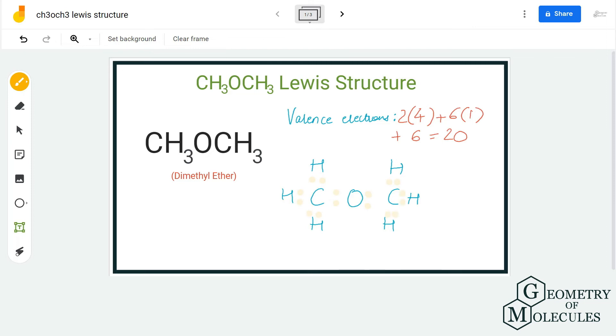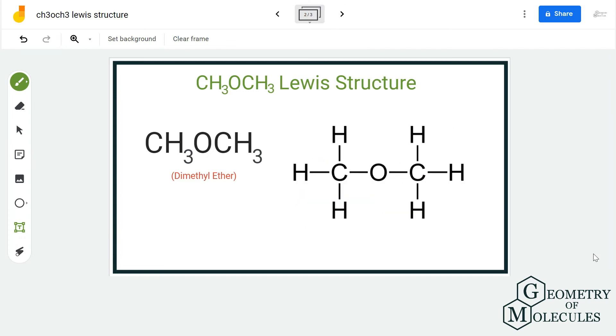Doing that, we have already used up 16 valence electrons out of 20 and we are just left with four more. These four electrons will be placed around oxygen atom. Doing that, you will see that all the atoms in this molecule have complete octets with eight valence electrons in each atom. This is the Lewis structure for CH3OCH3.